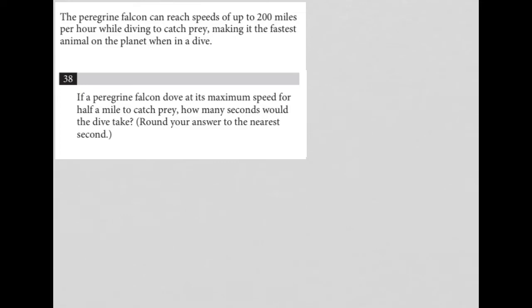This question says the peregrine falcon can reach speeds of up to 200 miles per hour while diving to catch prey, making it the fastest animal on the planet when in a dive. Question 38 asks, if a peregrine falcon dove at its maximum speed for half a mile, what is its maximum speed? It's 200 miles per hour. So if it did that for half a mile,